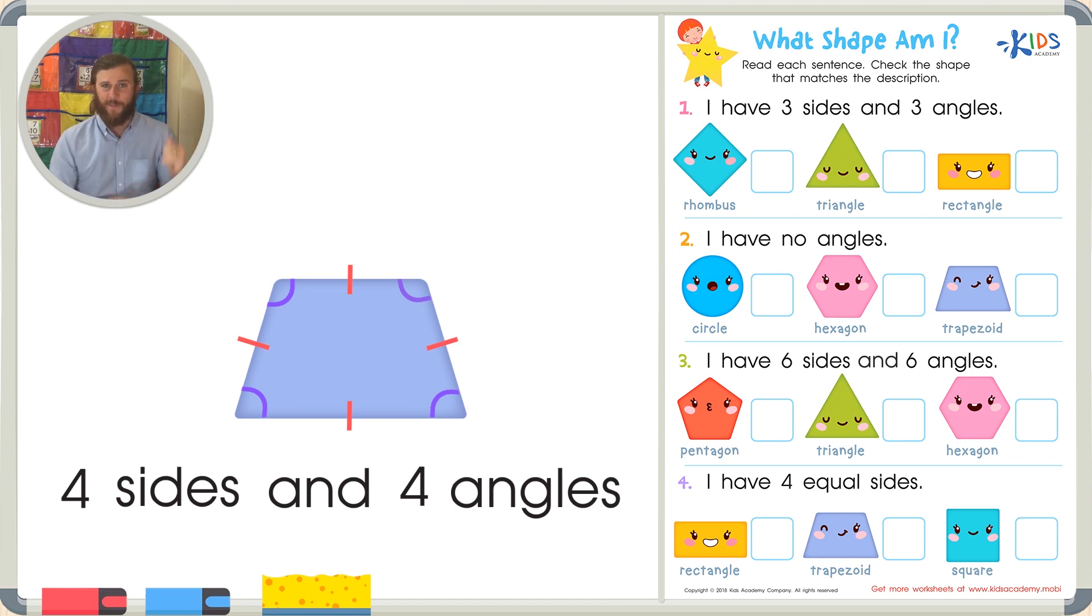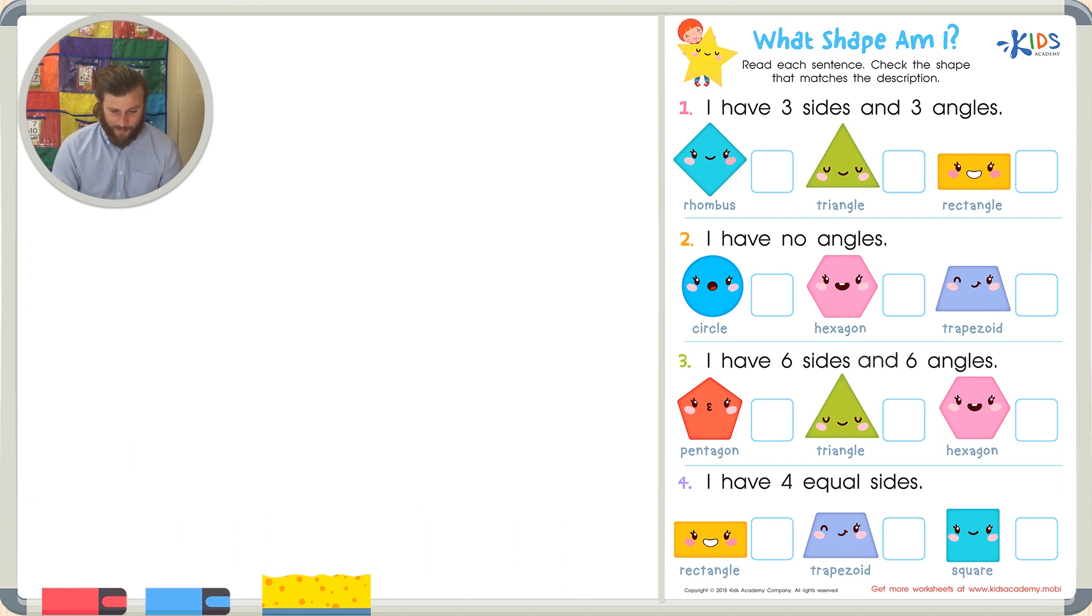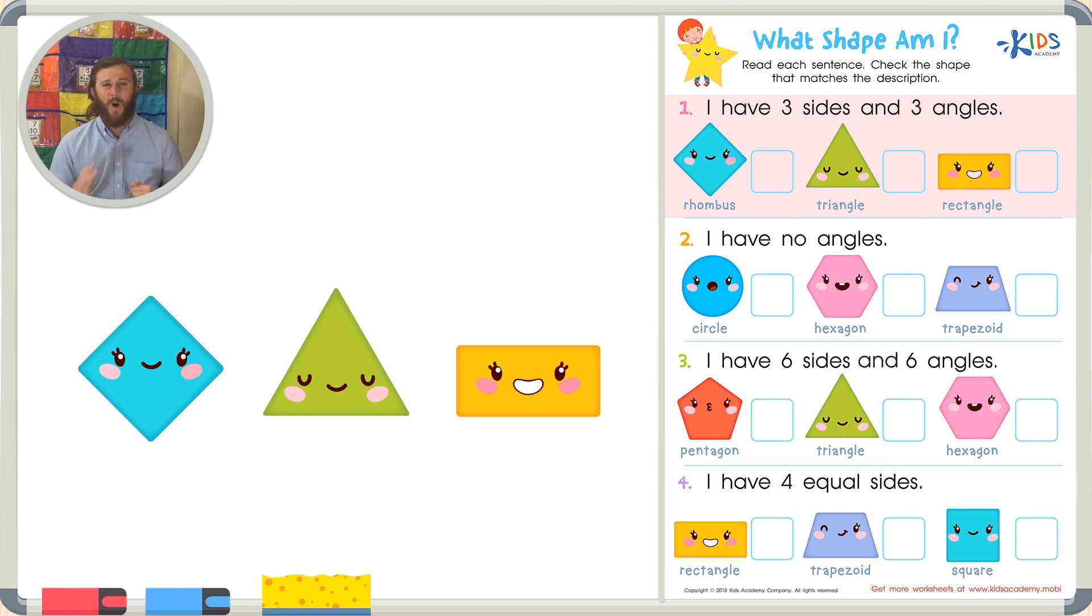So let's use this information to help us complete our worksheet. Let's read the directions and get started right away. What shape am I? Read each sentence, check the shape that matches the description. It's almost like a guessing game. Let's read the first sentence and see which shape matches the description: I have three sides and three angles. Can you think of a shape with three sides and three angles?